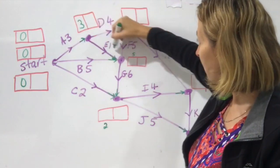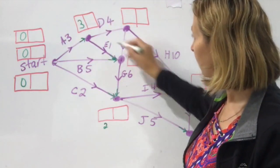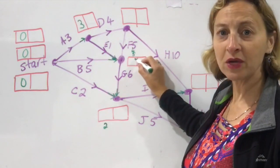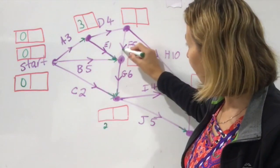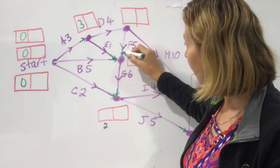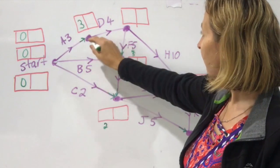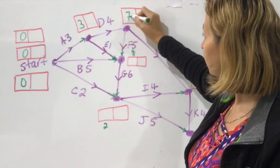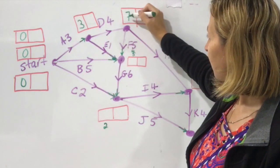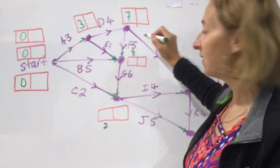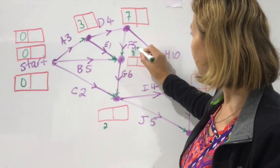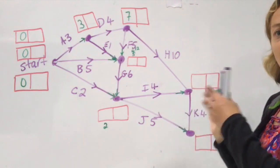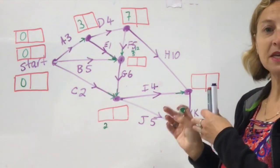Three plus one is four coming into there. So with that arrow coming in, I do three plus four which is seven. Then seven plus five is twelve — that's a big one. Remember, going left to right, I want the biggest number.